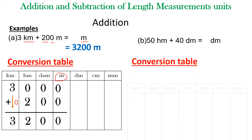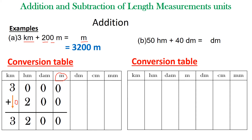As usual, first convert 50 hectometers into decimeters. The last digit is put in the position of the given unit — zero is put under hectometers and five is put before it. Then fill in with zeros until you get to the asked unit, which is decimeters.